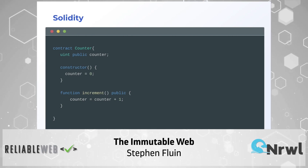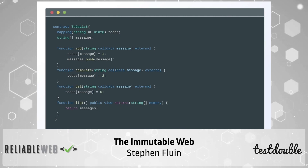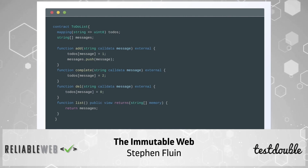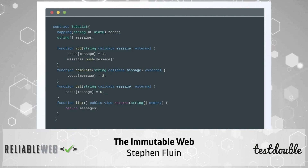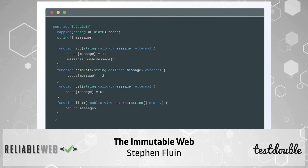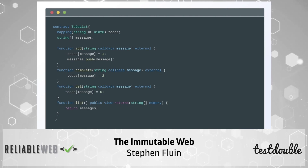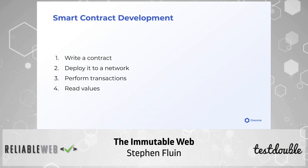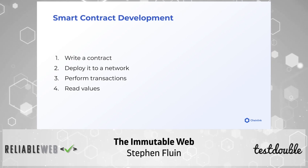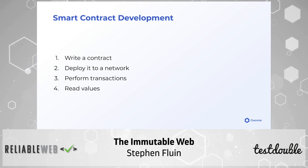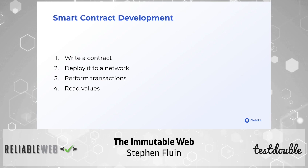For a more familiar web developer example, think about a to-do list: a mapping of messages to status numbers called the todos variable, plus an array of messages. Anyone can add a message — which saves it with status one — mark any message complete by setting it to two, or delete it by marking it as zero. Anyone with access to the blockchain can list all those messages and see those statuses. Instead of running on a single computer, it's running on the entire network. You write a contract, deploy it, perform transactions, and at any time you can read the values — it looks a bit like an API you'd build on the back end.